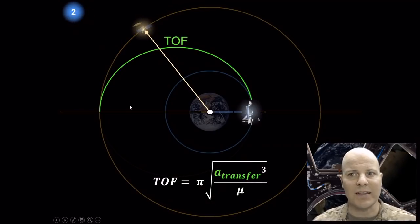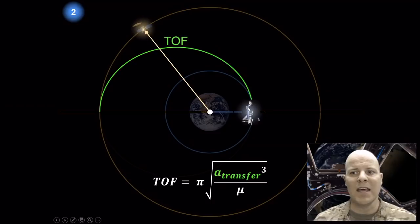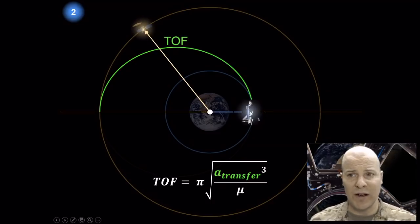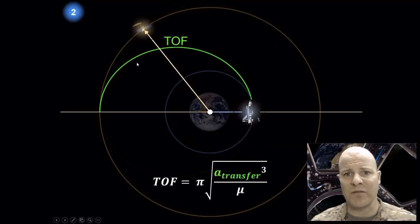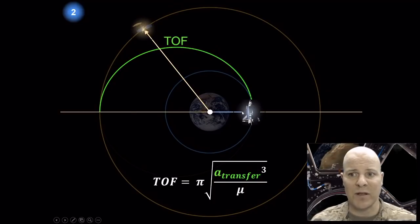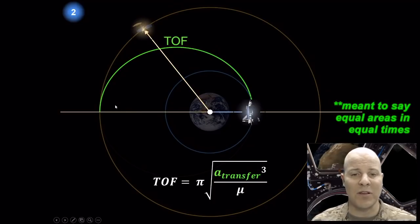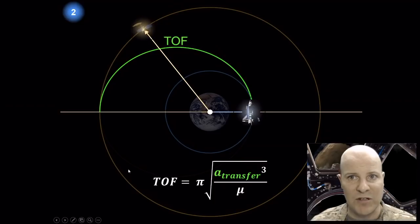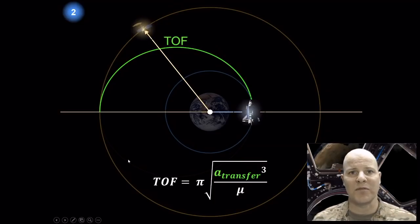Step two is to calculate the time of flight — how long does it take this maneuver to happen? Just as with our Hohmann transfer, the interceptor spacecraft travels along the transfer orbit for exactly half of its period. Remembering Kepler's laws, we sweep out half the orbit, so it takes half the time. That gives us time of flight equal to half the orbit period, related to our transfer orbit semi-major axis.